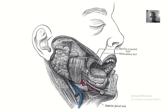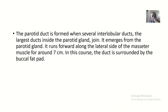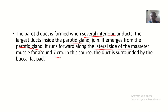This is the parotid duct, also known as Stensen's duct. You can see where it is on the maxilla — it's opposite the second upper molar tooth. The parotid duct is formed when several interlobular ducts inside the parotid gland join. It emerges from the parotid gland and runs forward along the lateral side of the masseter for about seven centimeters.